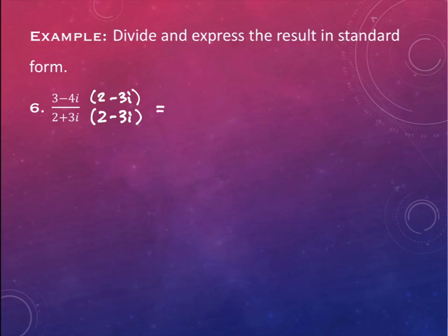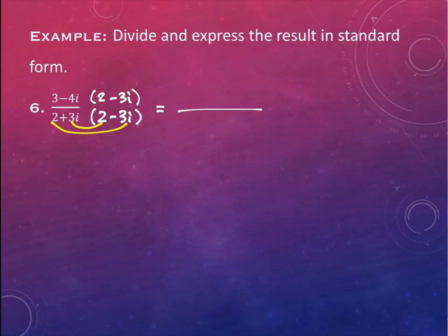The denominator is not much different. Again, the inner and the outer terms are going to cancel — this is going to give me positive 6i and this one negative 6i. So I only need to multiply the first terms: 2 and 2, which gives me 4. And then the last terms: 3i and negative 3i, which gives me negative 9i squared. That's my denominator.